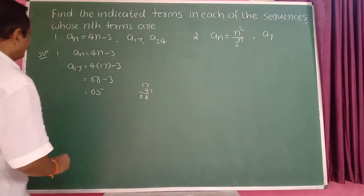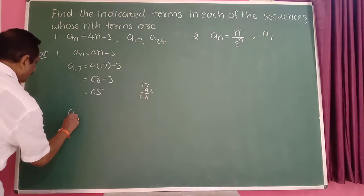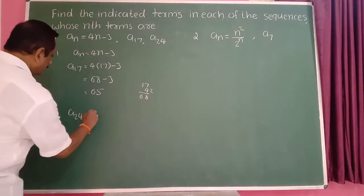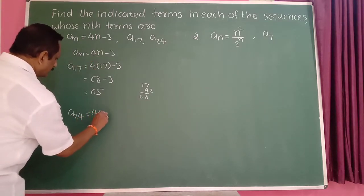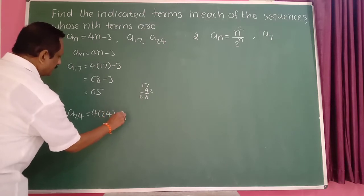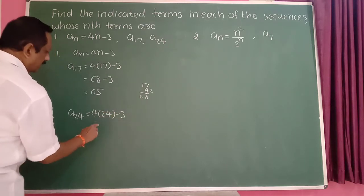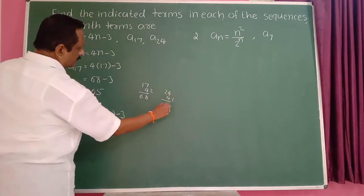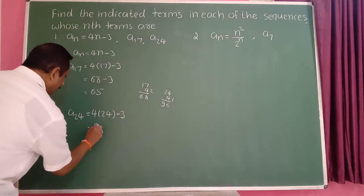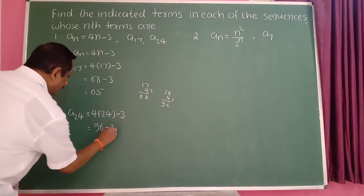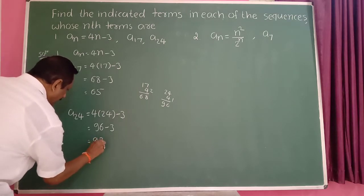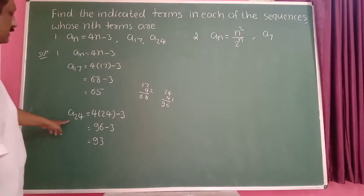Need to find a_24. So a_24 is equal to, put n equal to 24 here. So 4 into 24 minus 3. 24 into 4 is 96. Minus 3. 96 minus 3 becomes 93. So the 24th term is 93.